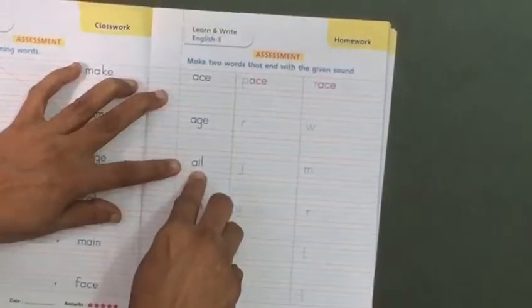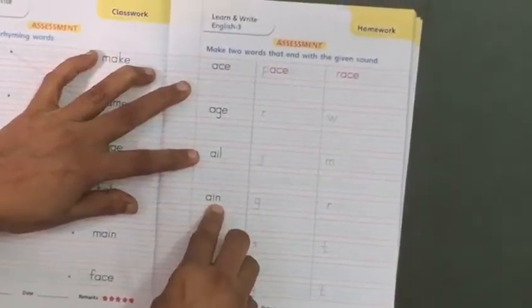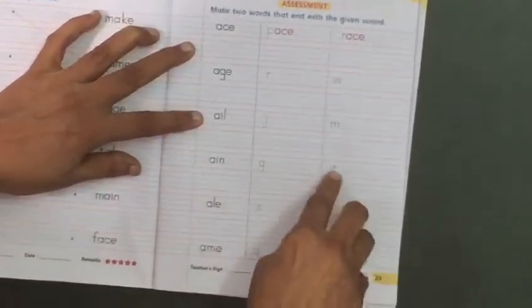A-I-L. L is the sound. J-A-I-L jail, M-A-I-L mail. A-I-N. N is the sound. G-A-I-N gain, R-A-I-N rain.